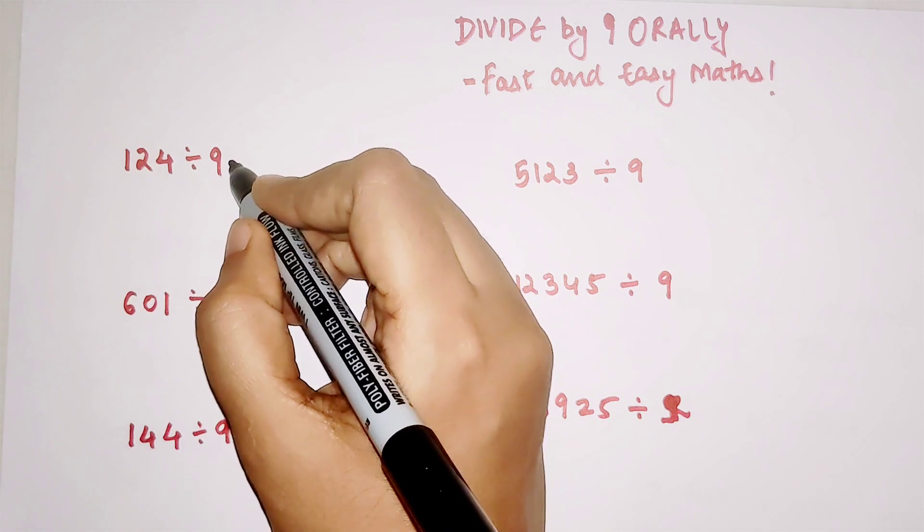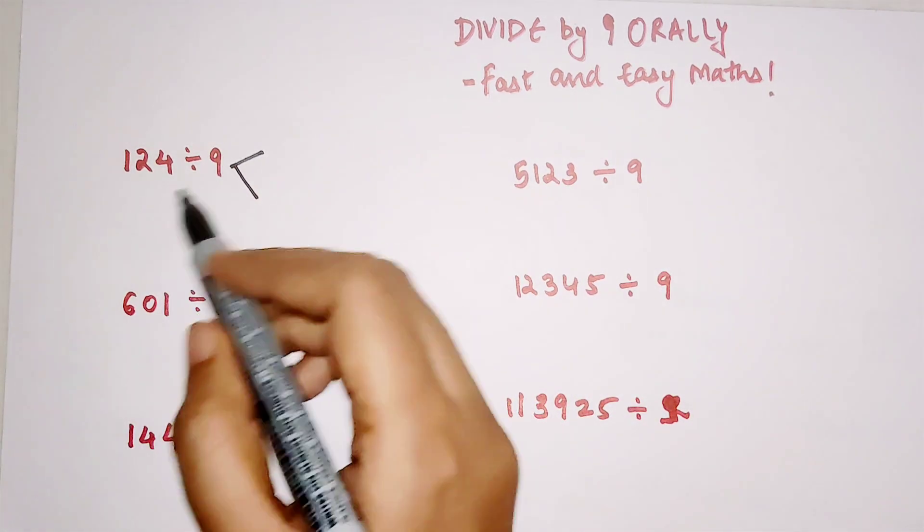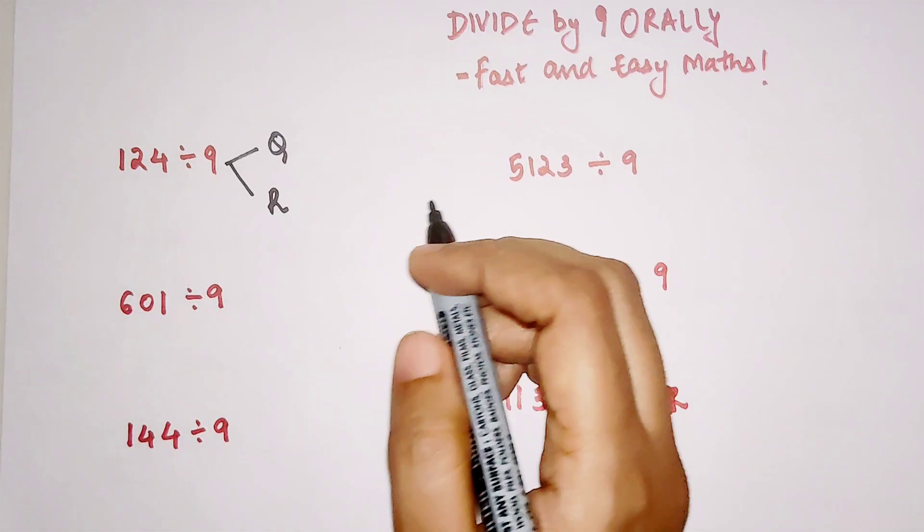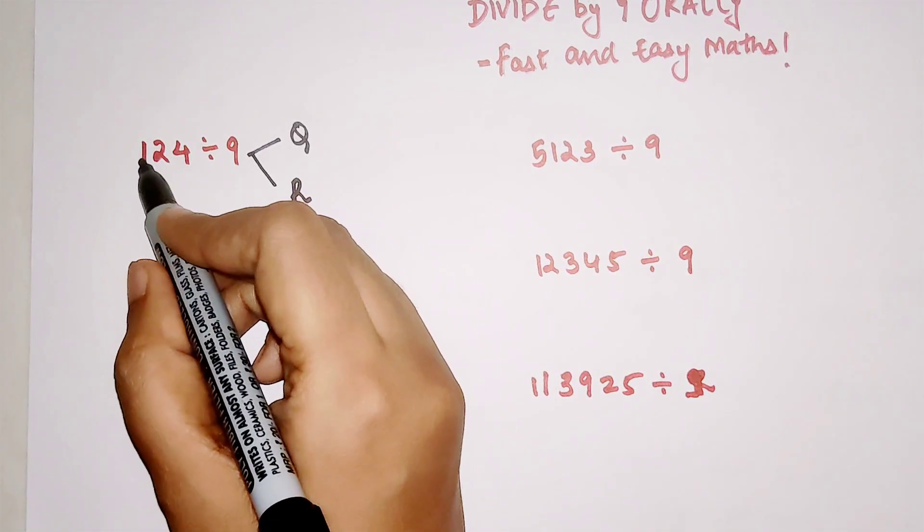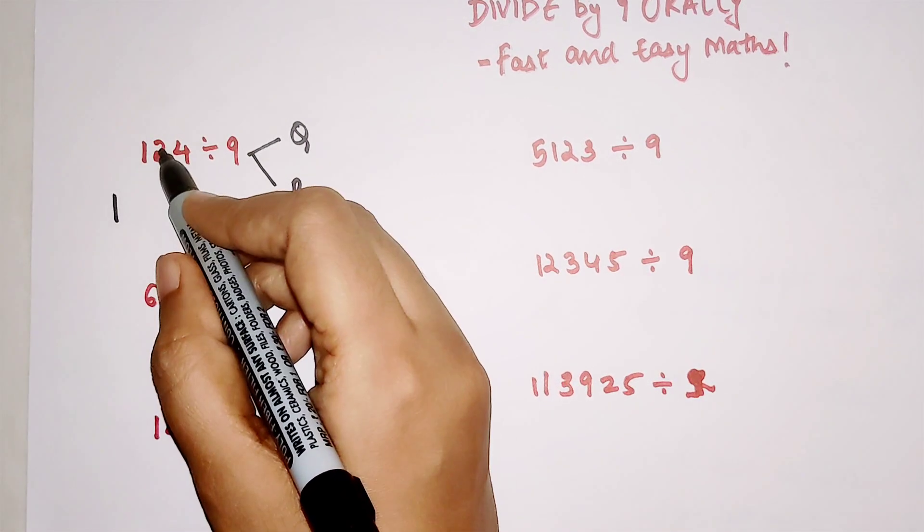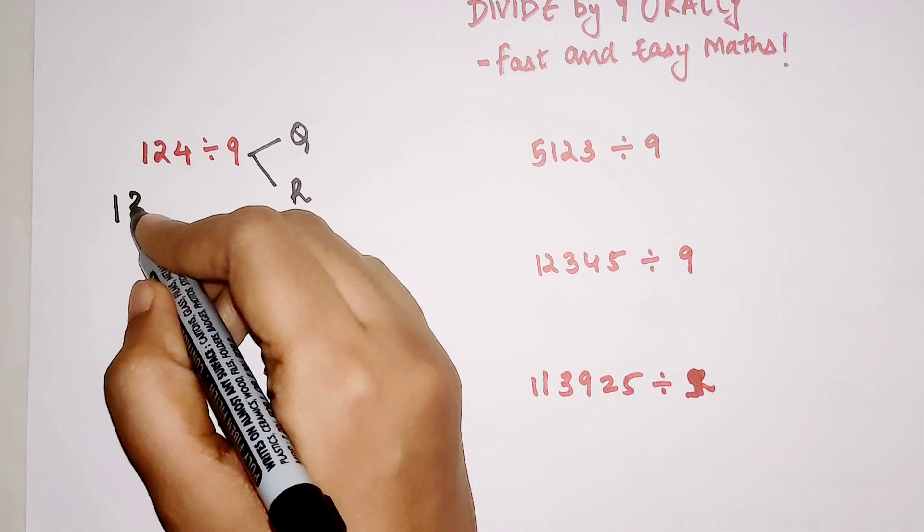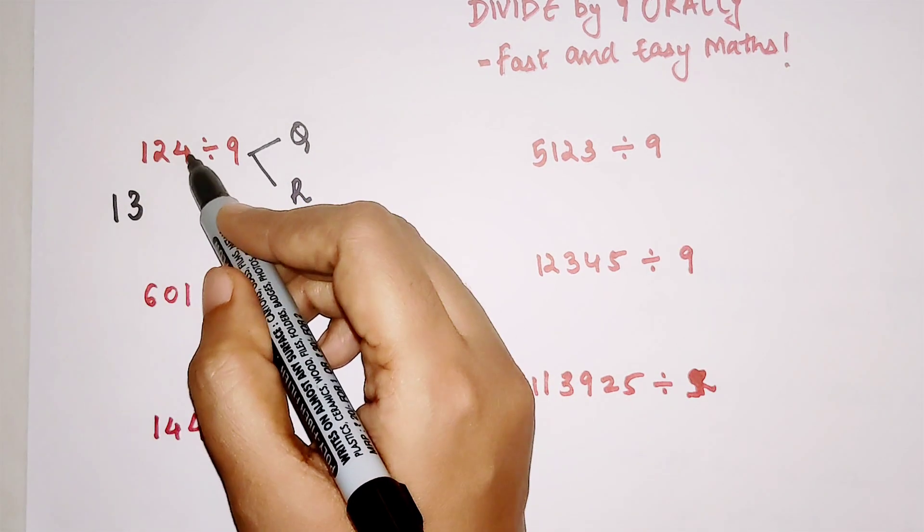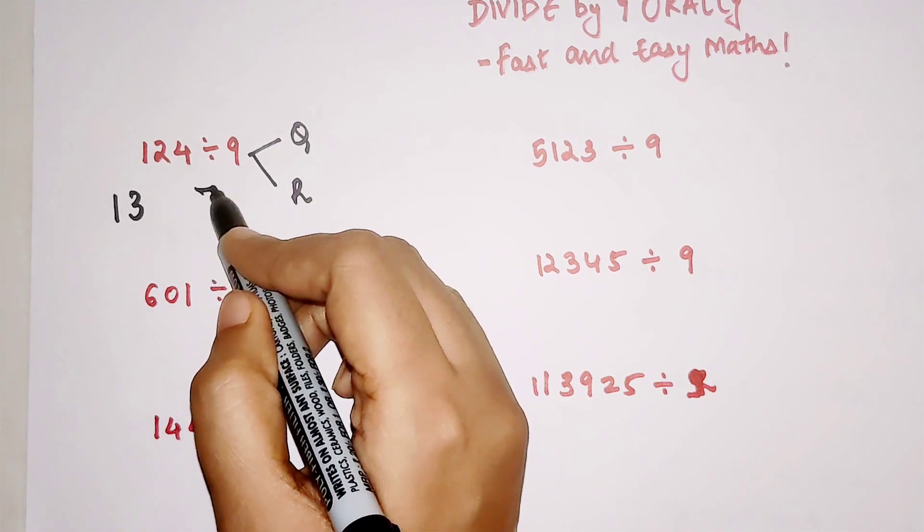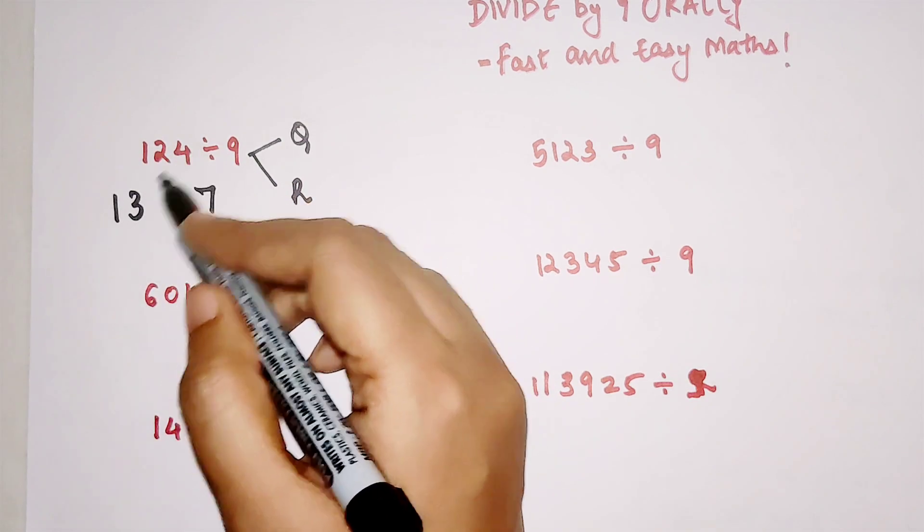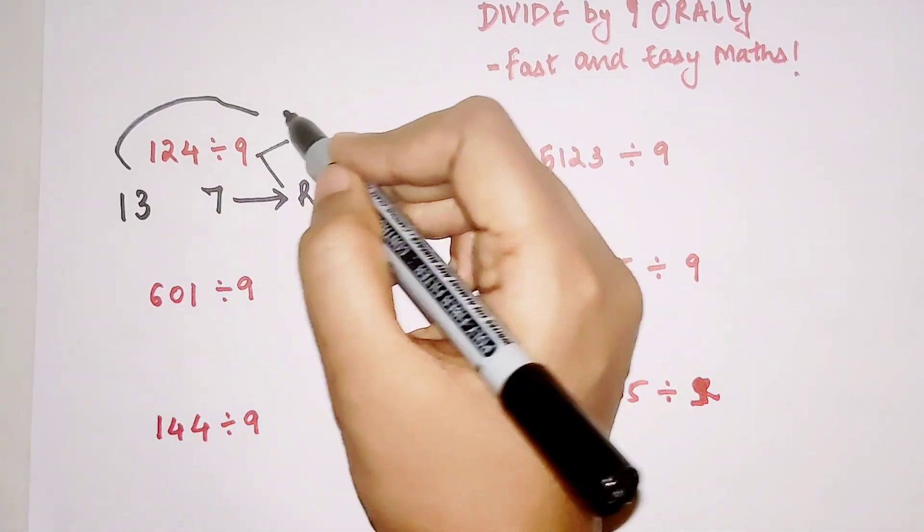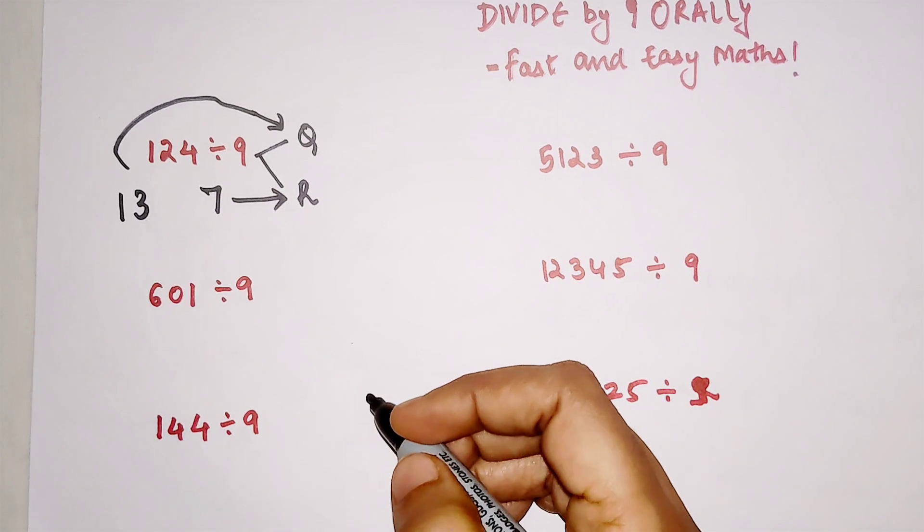The trick goes like this: when you have a number, looking at that number you will be able to tell what is its quotient and remainder. The first thing you should do is write your first number as it is, then add this one to the next number which is 2, so the answer is 3. Then you add this 3 to the next number, which is 3 plus 4, giving you 7. Now, since there is no number after 4, the last number addition becomes your remainder and 13 becomes your quotient.